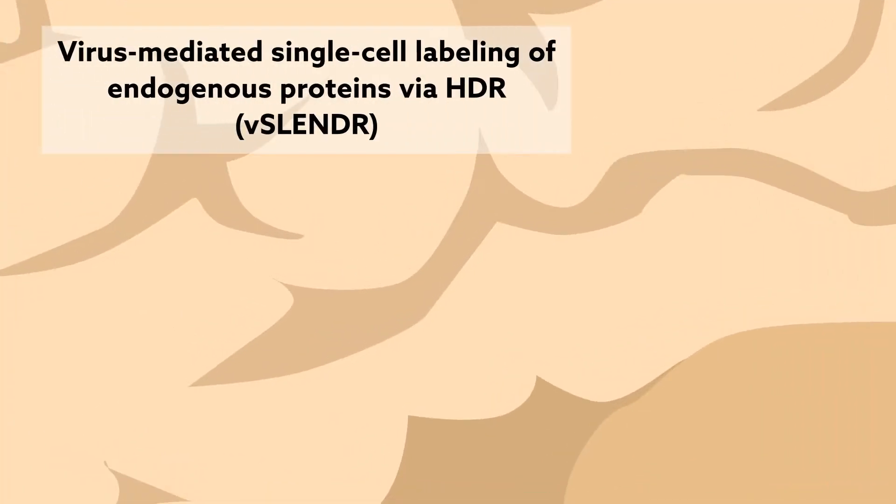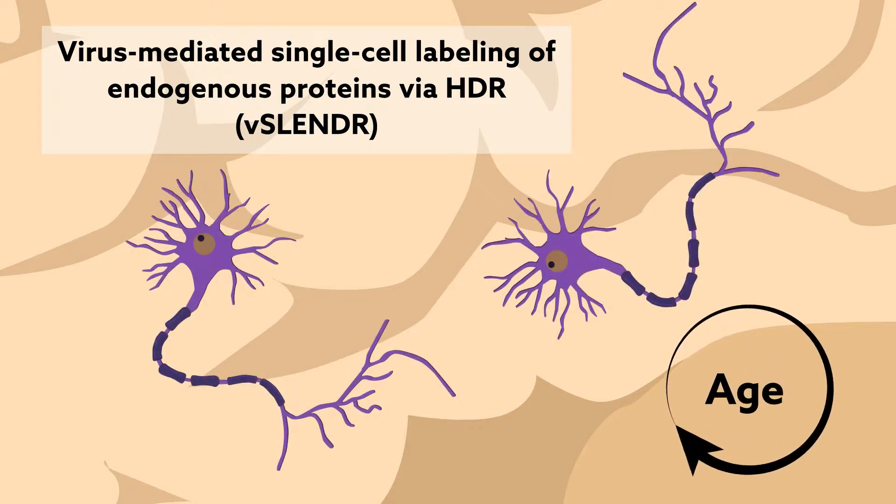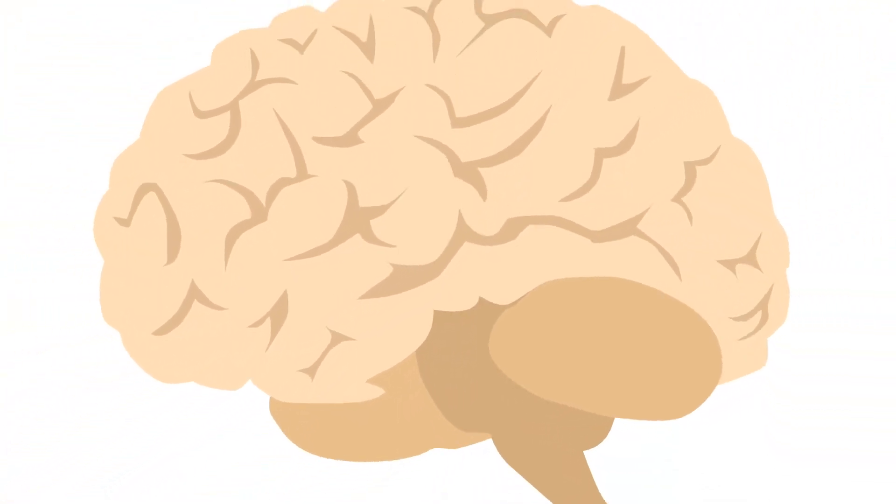The new method, which the team calls V-Slender, is capable of working in virtually any brain area, cell type, and age, regardless of whether cell division is still happening, greatly expanding the types of experiments neuroscientists can do to probe the function of the brain.